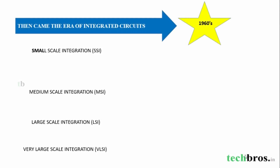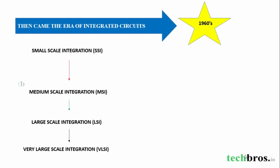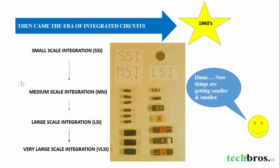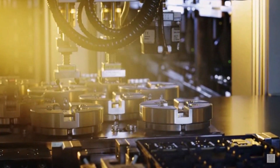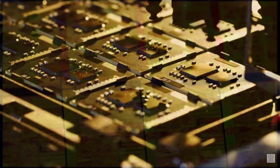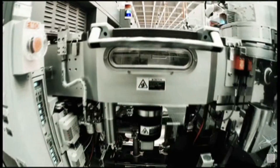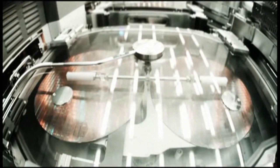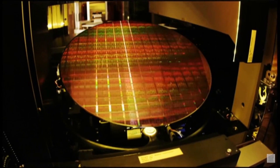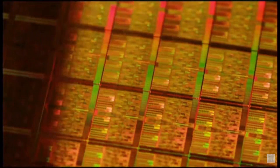Integrated circuits, or ICs. The first generation were small scale integration, medium scale integration, large scale integration, and very large scale integration. ICs function as amplifier, oscillator, timer, counter, or a microprocessor. The first generation ICs were developed in 1958 by Jack Kilby in the form of flip-flops. VLSI technology began in the 1970s. Very large scale integration is the process of creating an integrated circuit by combining thousands of transistors into a single chip.